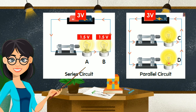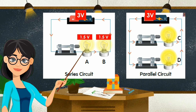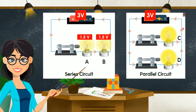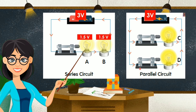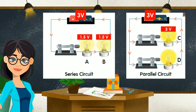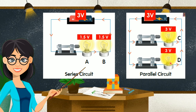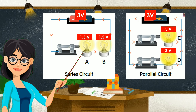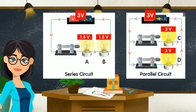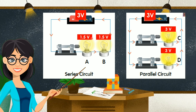Meanwhile, in the parallel circuit, the dry cell has 3 volts and the electric current has more than one path to flow. So each bulb will get 3 volts. That is why the bulb will become brighter than the bulb in the series circuit.